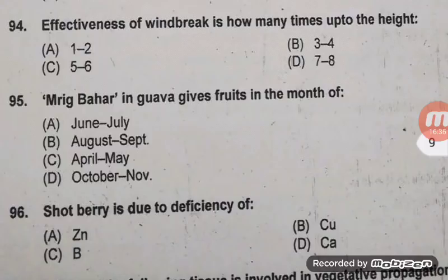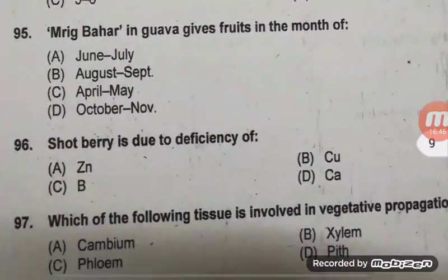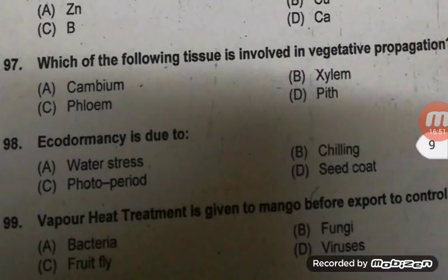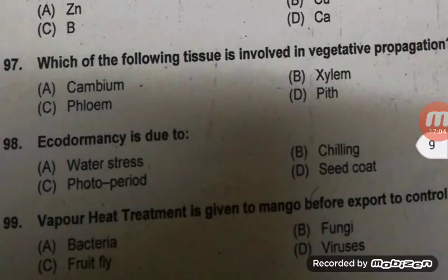Question 95: Mrig bahar in guava gives fruit in the month of October–November — right answer D. Shortberry is due to deficiency of boron — this is the major physiological disorder of grape. Which tissue is involved in vegetative propagation? Right answer A — cambium. Ecodormancy is due to water stress — right answer A.